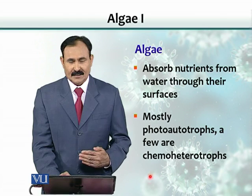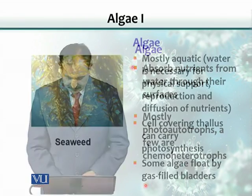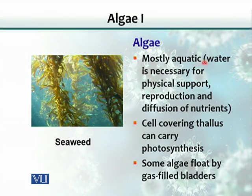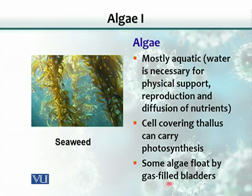Algae are mostly aquatic in nature because they need water for physical support, reproduction, and diffusion of nutrients. The body, which we call thallus, carries out photosynthesis. Some algae also float by gas-filled bladders — they have trapped air in them, and that air helps them float in water.